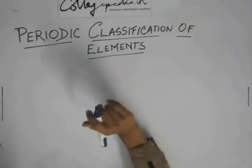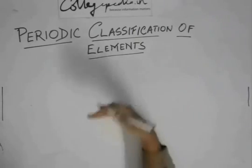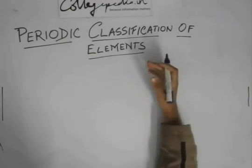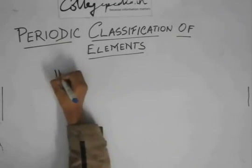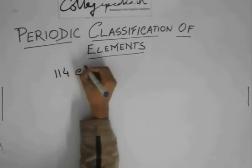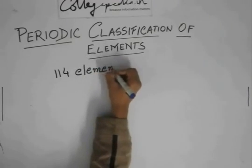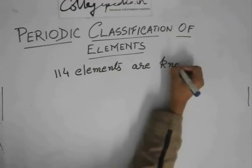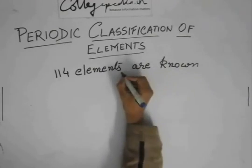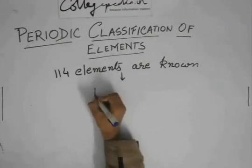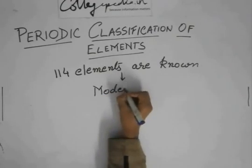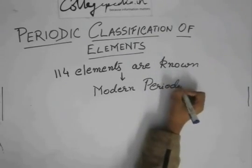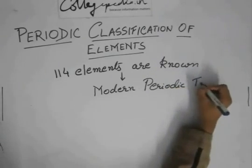So what the scientists decided is that they would classify the elements in some order. Now at present, 114 elements are known and they are classified under the modern periodic table.